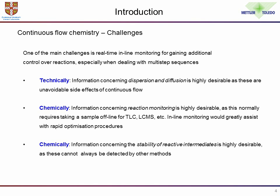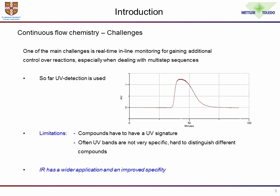There are significant challenges with the techniques we have today. For example, if we were to use UV monitoring — pretty well the only detection technique currently available for inline monitoring — there are significant problems and limitations. Not all compounds have a UV signature we can make use of, and often the UV bands are not terribly specific. If you have mixtures of compounds, it becomes very difficult to distinguish between them without diode array or further analysis. Infrared spectroscopy has, in principle, much wider application and very much improved specificity, providing this additional structural information which we can deconvolute by various computational or manipulative methods.